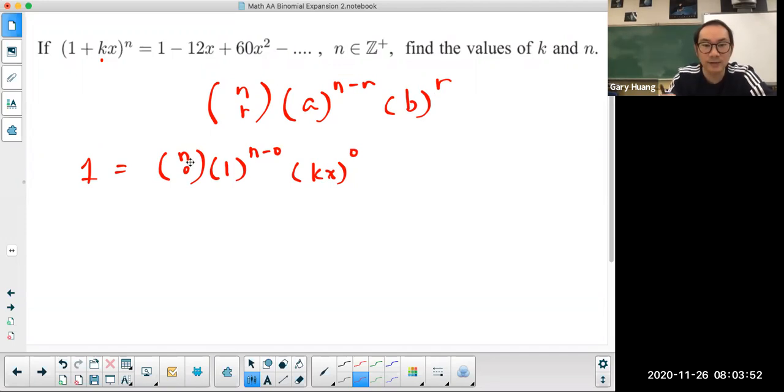Now it's not really going to give you any information because n choose 0, doesn't matter what the value of n is, it's always going to be equal to 1. Here 1 raised to any power n is always going to be 1, and kx raised to the power of 0 is always going to be 1. So the first term is always going to be 1 anyways, so it's not really helping here.